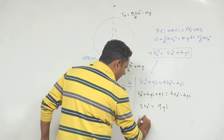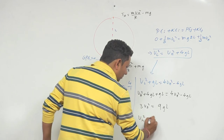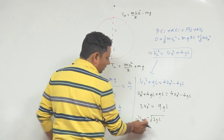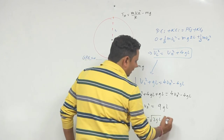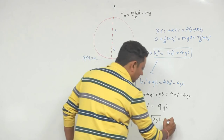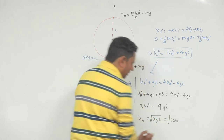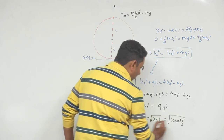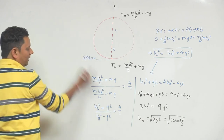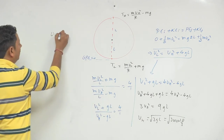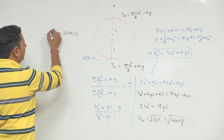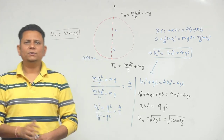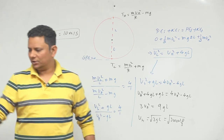3 से divide करने पर: V²_H = 3gL। Under root लेने पर: V_H = √(3gL)। अब given values रखते हैं: g = 10, L = 10/3। So V_H = √(3 × 10 × 10/3) = √100 = 10 m/s। यह final correct answer है, which means option number D is the correct choice.